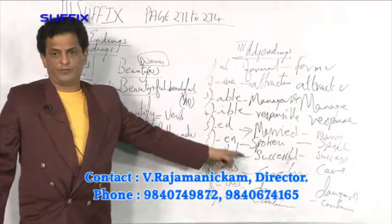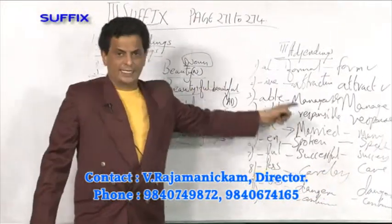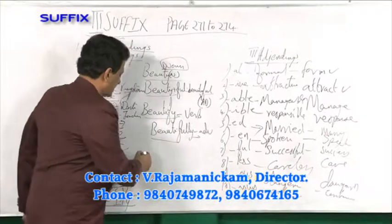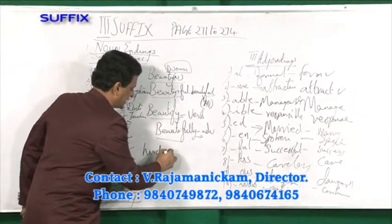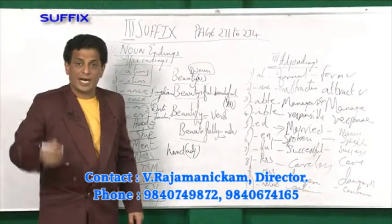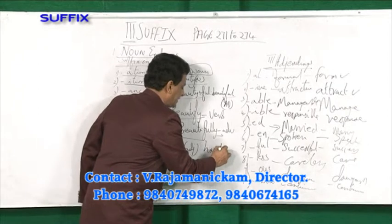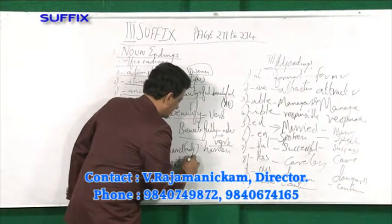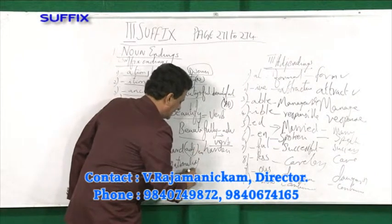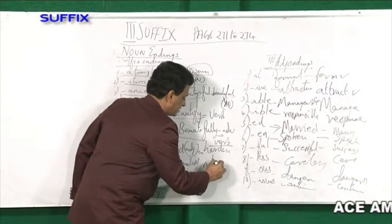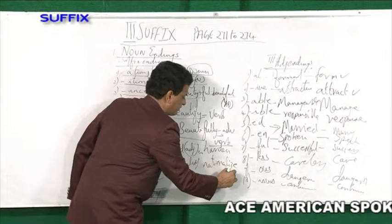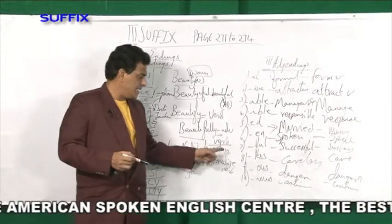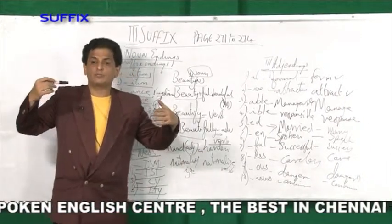This is very important, my dear friends. You have seen noun endings and adjective endings. Now, verb endings. 'Hard' is an adjective — from this, if you add '-en', you get 'harden', which is a verb. 'National' is an adjective — if you add '-ize', you get 'nationalize', which becomes a verb. So, with an adjective or noun, if you add '-en' or '-ize', it becomes a verb.